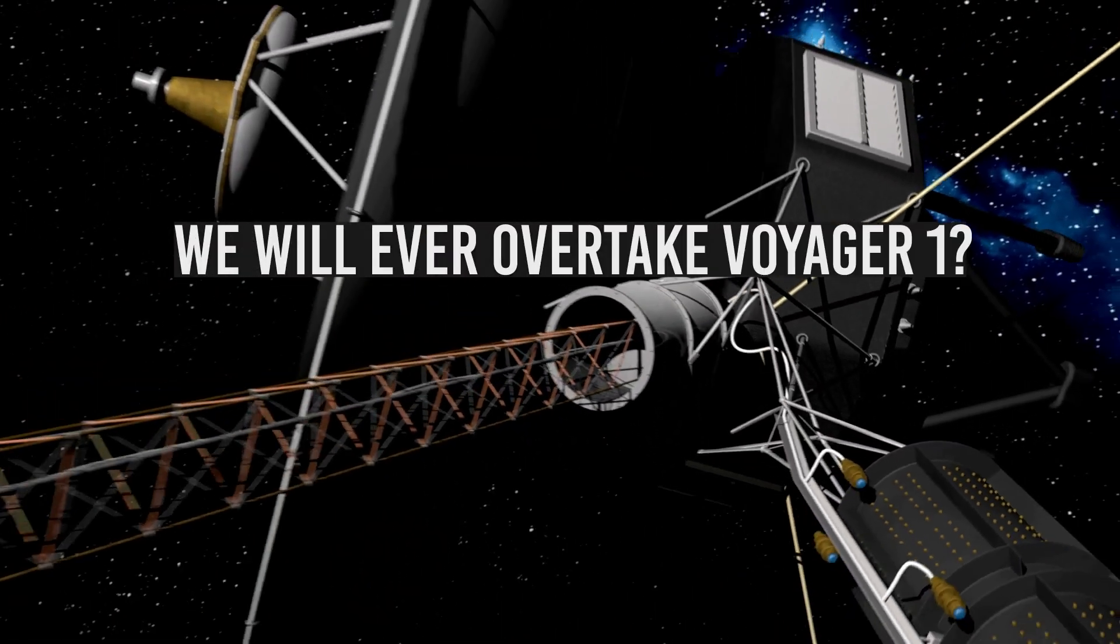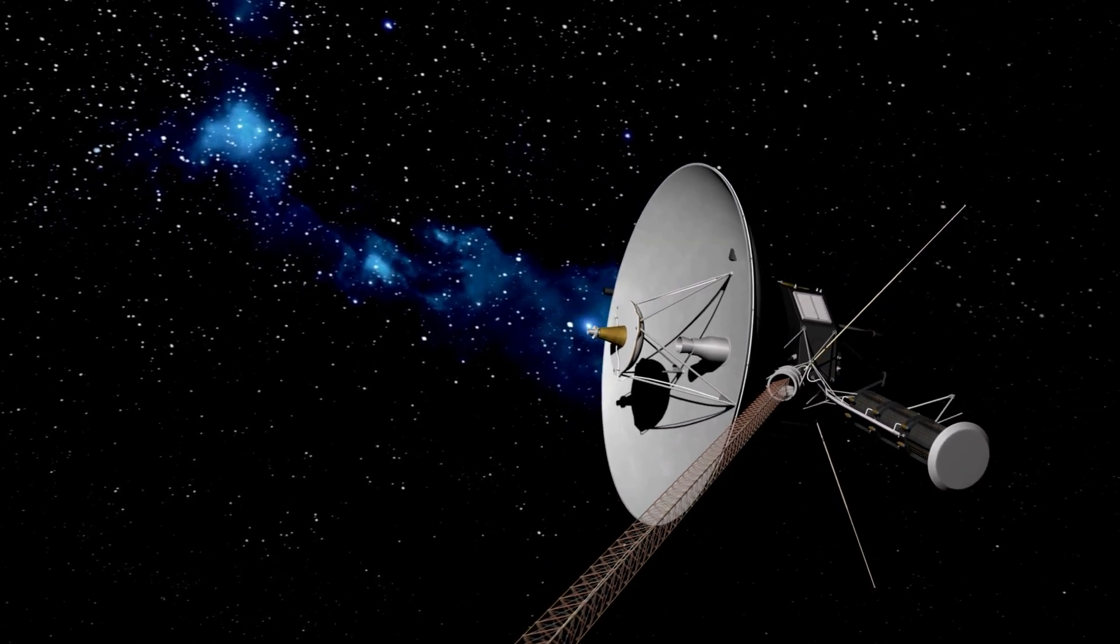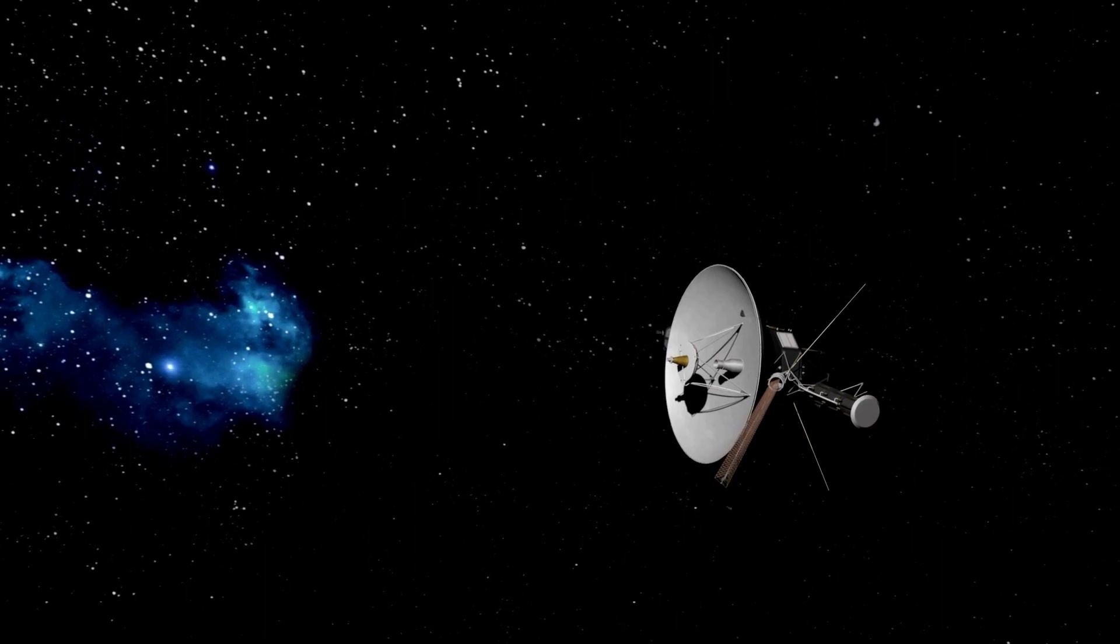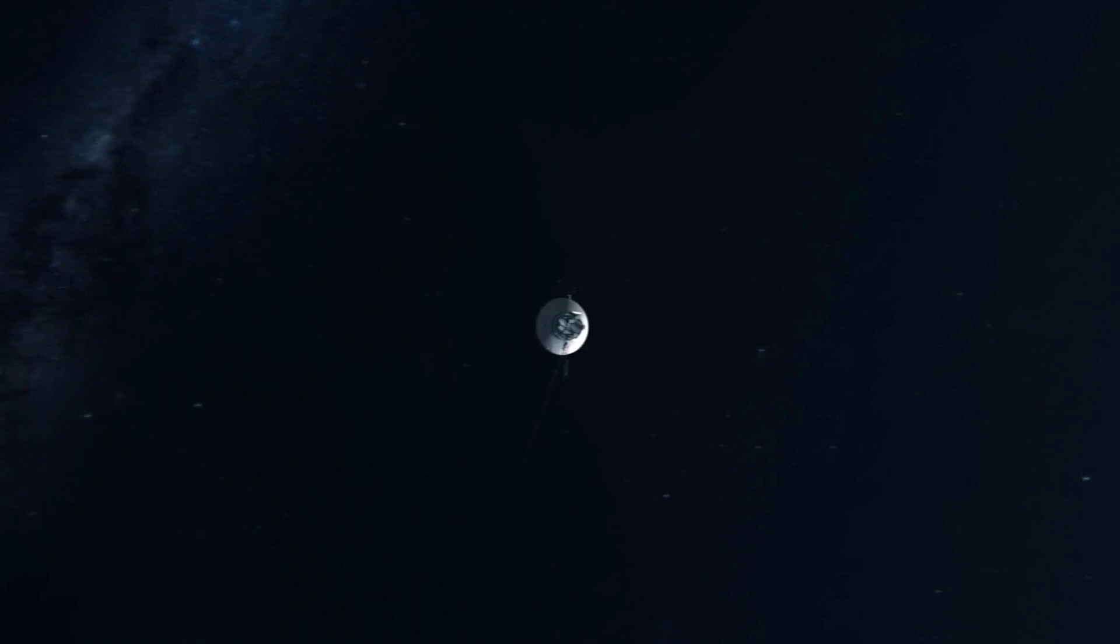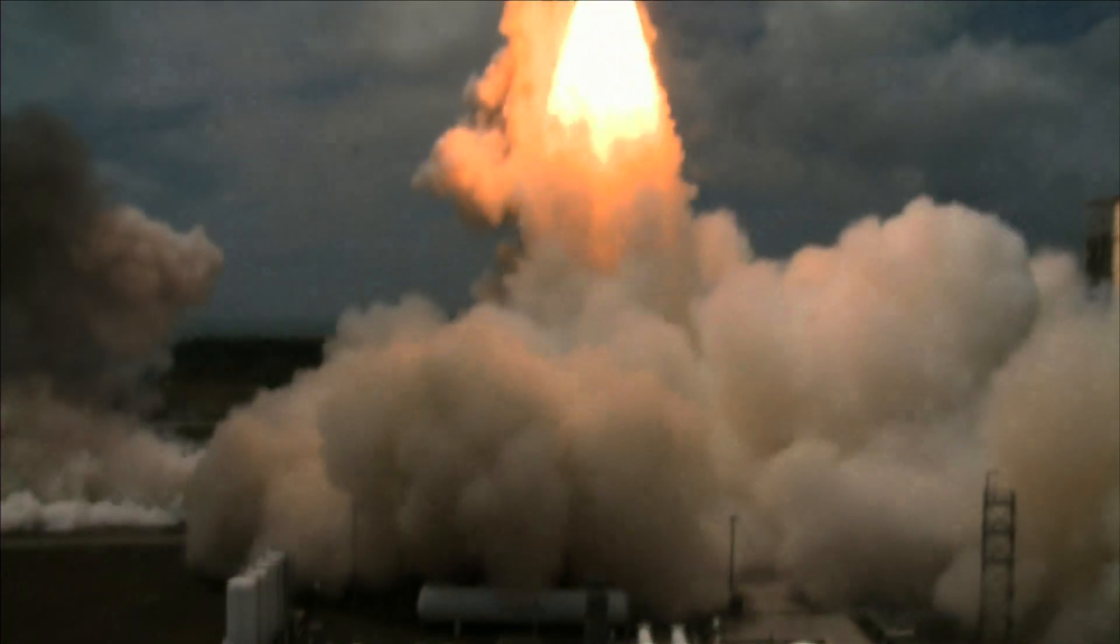Will we ever overtake Voyager 1? In the entire history of humanity, only five spacecraft have had the correct trajectory needed to exit the solar system. The first to leave our solar system was the Voyager 1 spacecraft, which already has a head start over the others. But will any spacecraft ever overtake Voyager 1? Let's talk about that and more in this video.